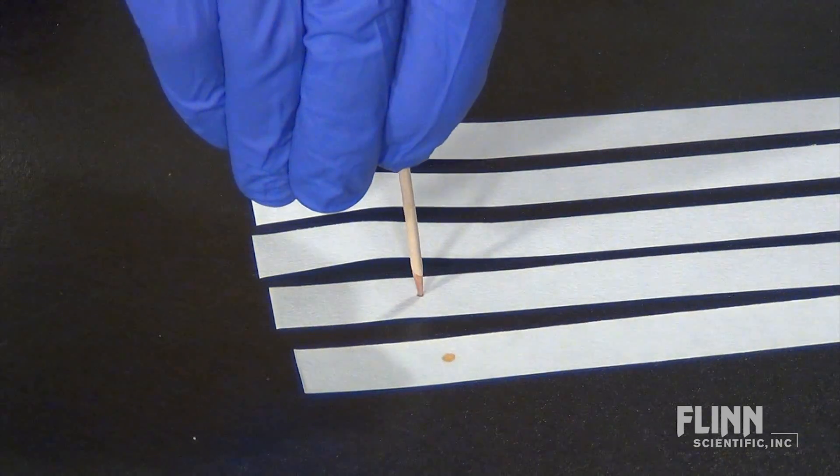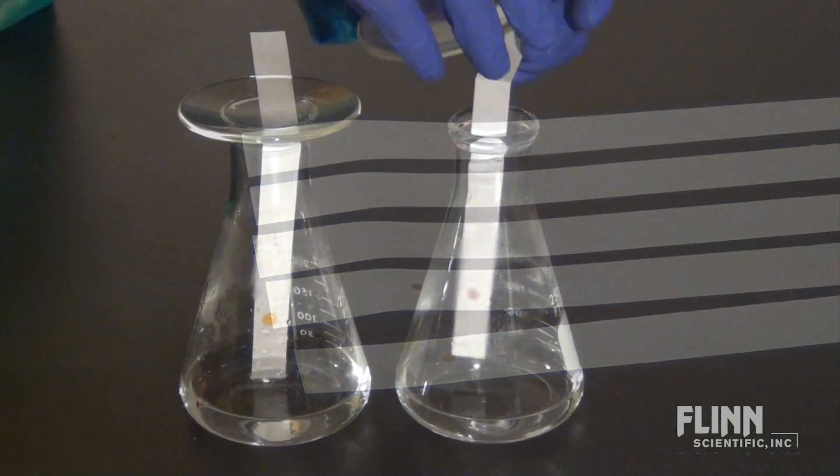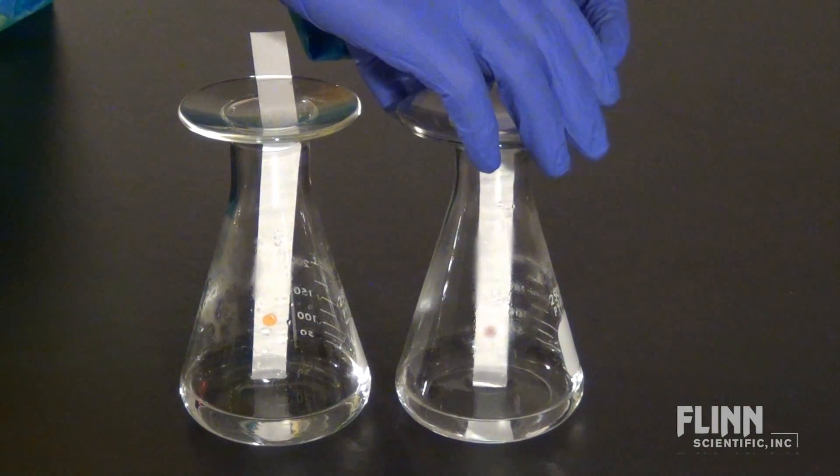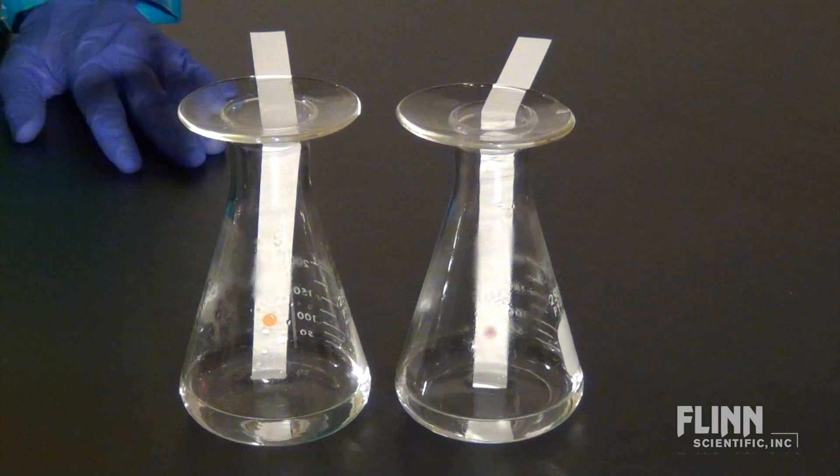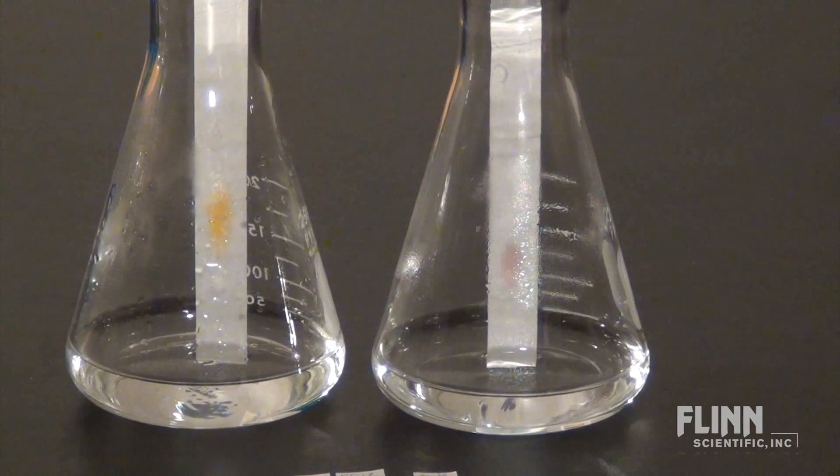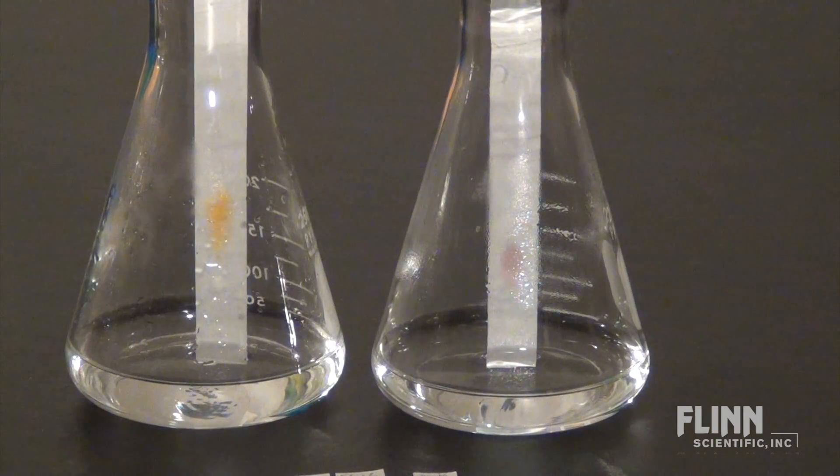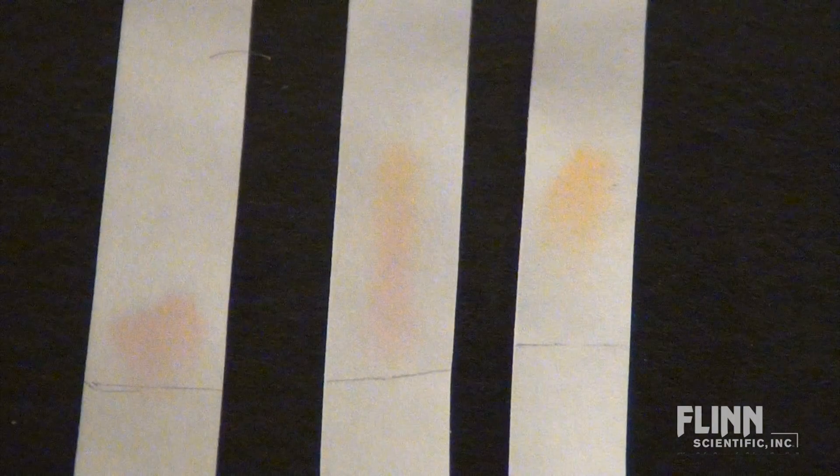Then dot the concentrated dye mixture on the chromatography paper and place the end in the development solvent. Measure the distance the solvent moves and the distance the dye moves and compare these to the control runs of the pure FD&C dyes to determine the composition of the candy coating.